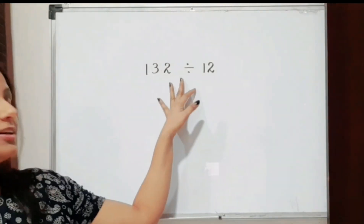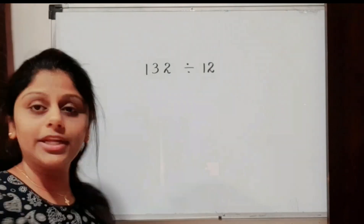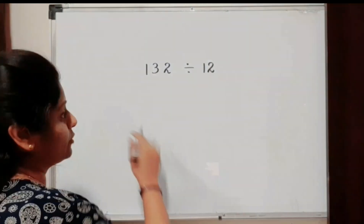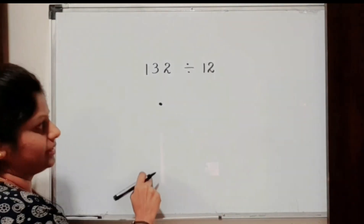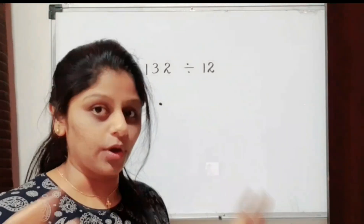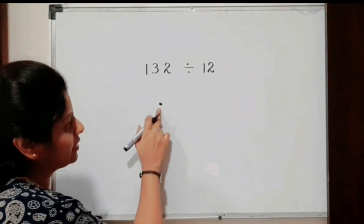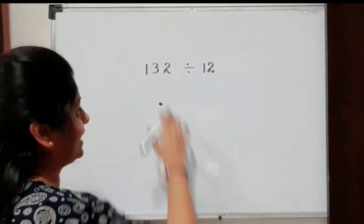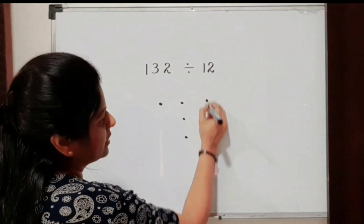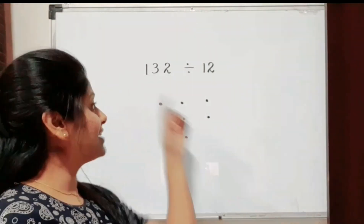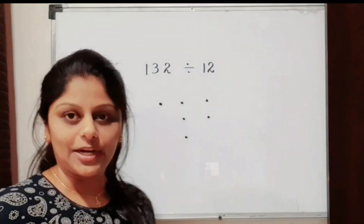The first question is 132 divided by 12. First, we have how many digits? Three digits: 1, 3, and 2. Therefore we have to make dots in three columns. For the first digit 1, I make one dot. For the second digit 3, I make three dots. And for 2, I make two dots. In each column, we draw as many dots as the digit value. This is the first step.